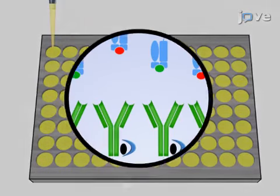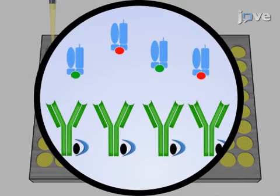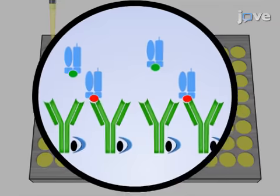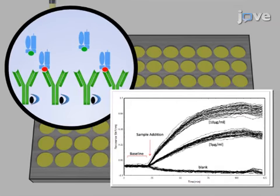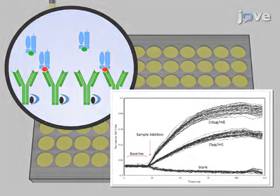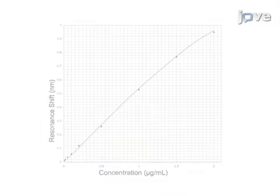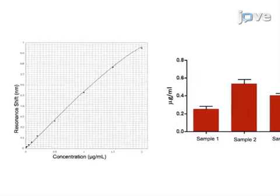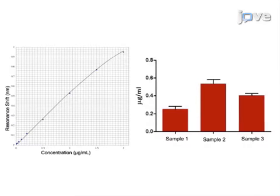Next, binding of the target antigen to the antibody on the label-free bioassay system is monitored until equilibrium is reached. The final step is to analyze the resulting data by using the standard curve to quantify the amount of target antigen in patient samples.